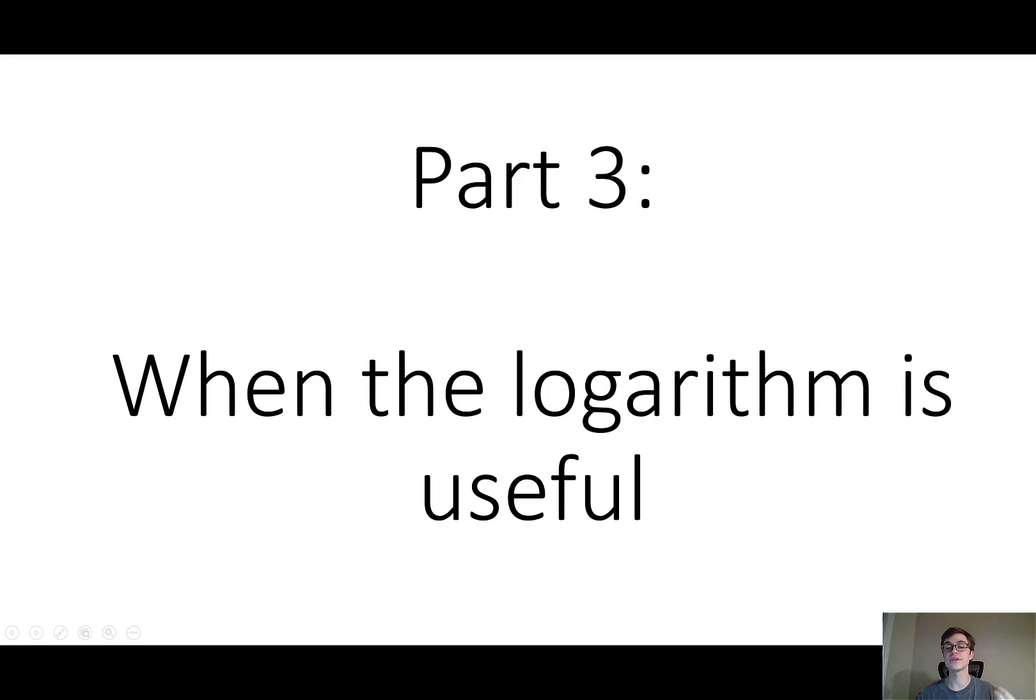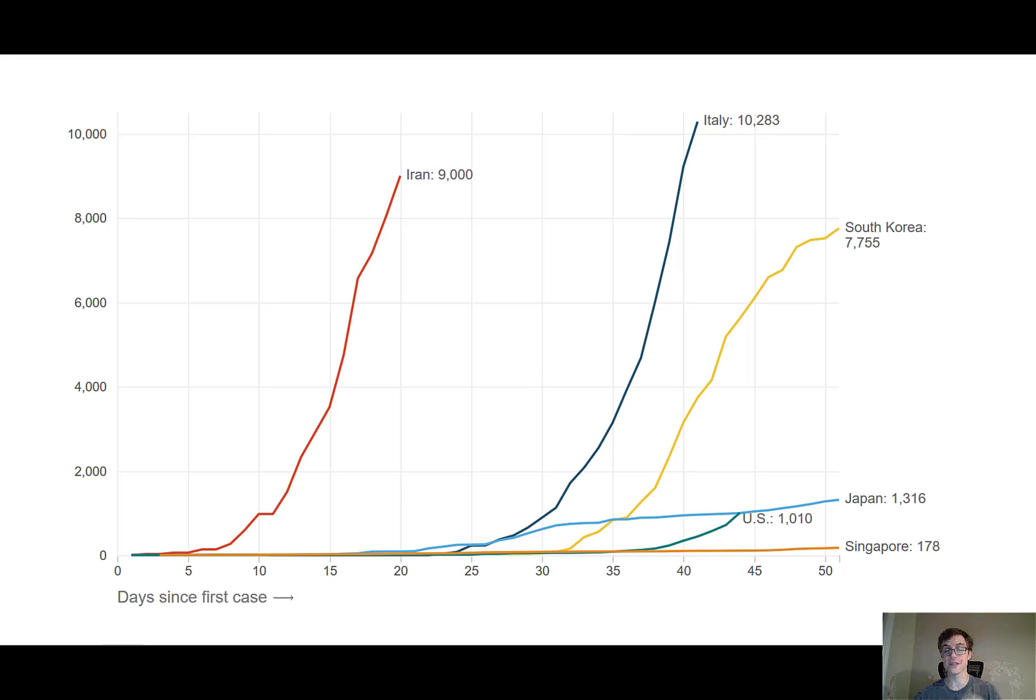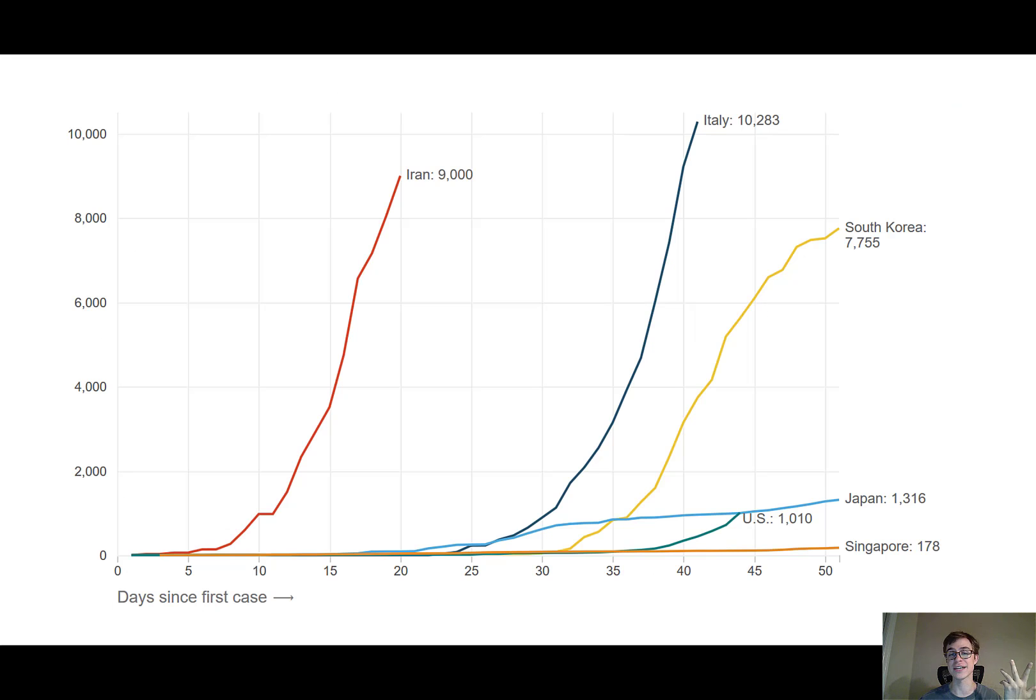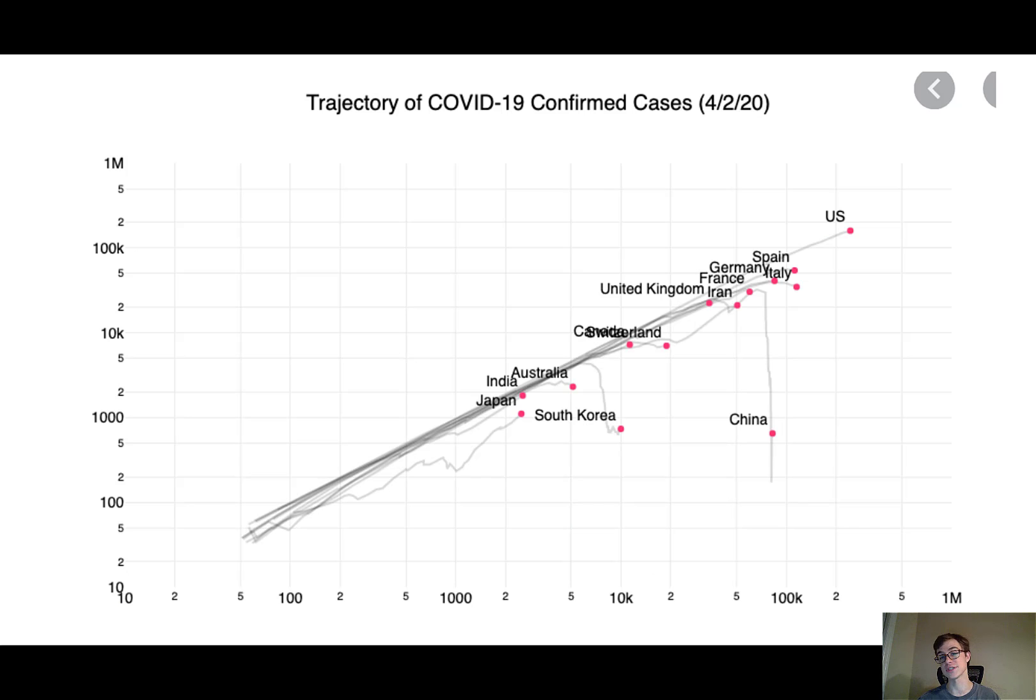So, finally, part 3: when is the logarithm useful? And I'll be relevant here and show you COVID-19 cases. These are COVID-19 cases in a bunch of different countries. You can definitely see the exponential shape of the curve, which means that as time goes on, you get more and more cases per day. This is also a graph of the COVID-19 cases in different countries, but it's weird because this is a straight line. This is a curve. This is a straight line, and maybe you've seen these graphs and you've been confused.